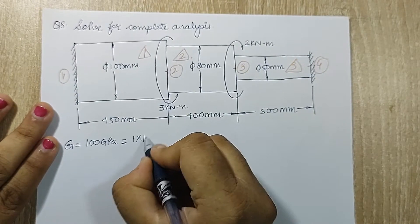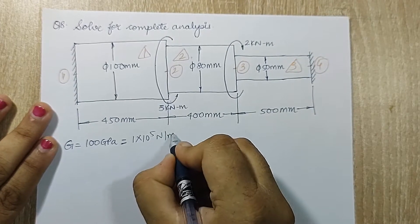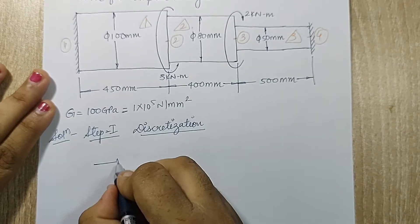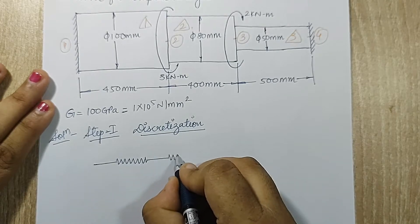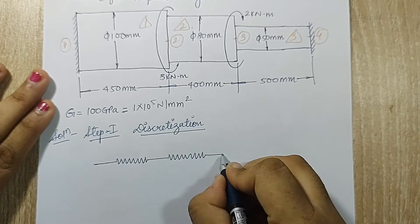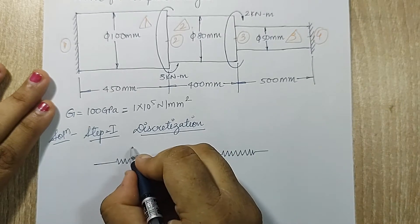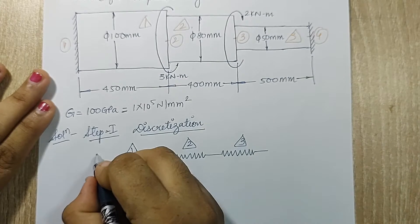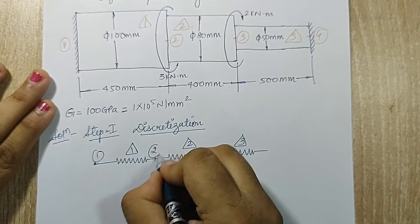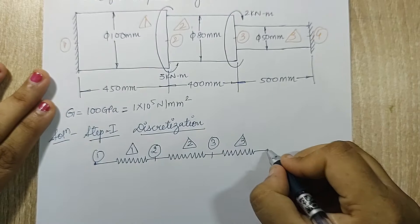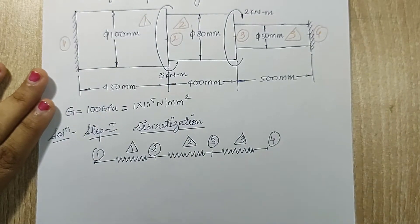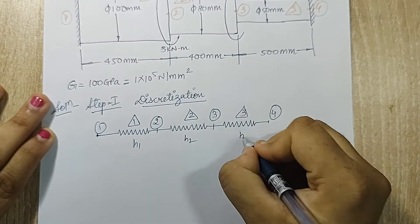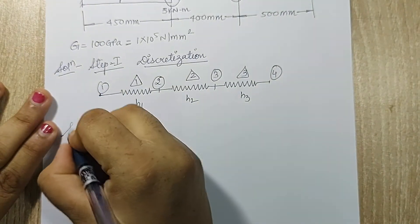I solve G as 1 into 10 raised to 5 Newton per mm squared. Step 1 is discretization. I'll draw elements 1, 2, and 3. Element 1 is between nodes 1 and 2, element 2 is between nodes 2 and 3, and element 3 is between nodes 3 and 4. There are 4 total nodes. h1 is 450, h2 is 400, and h3 is 500.